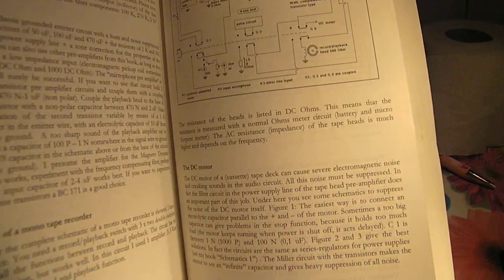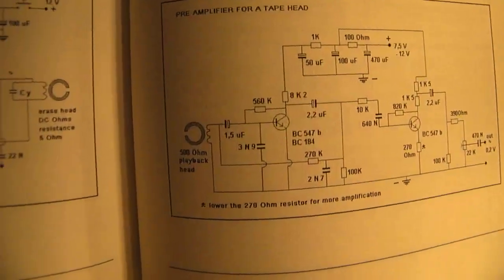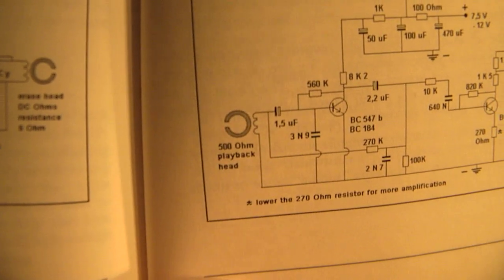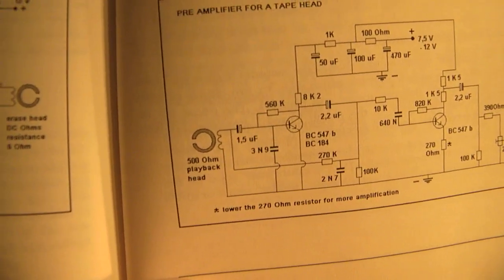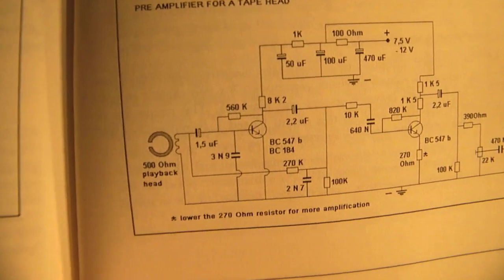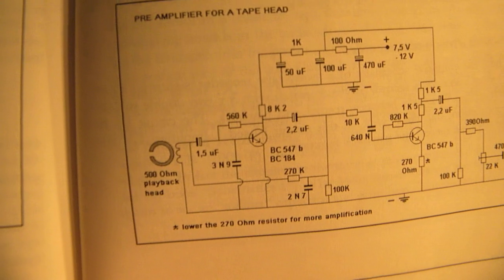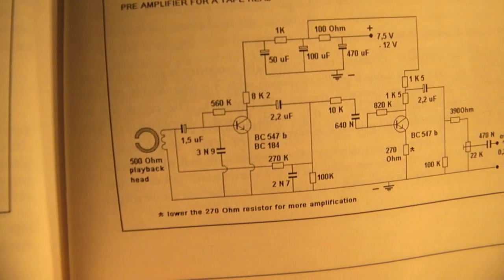So that was more or less all to tell. The record head and playback head, the first transistor. You can use a transistor with a low noise figure.